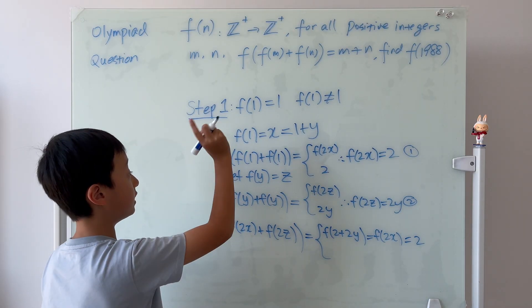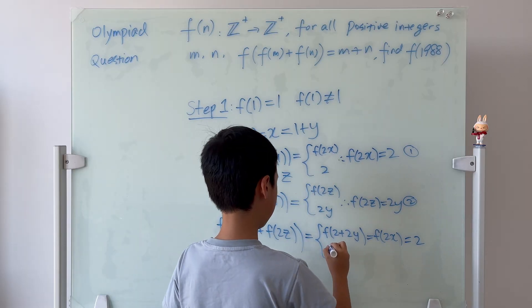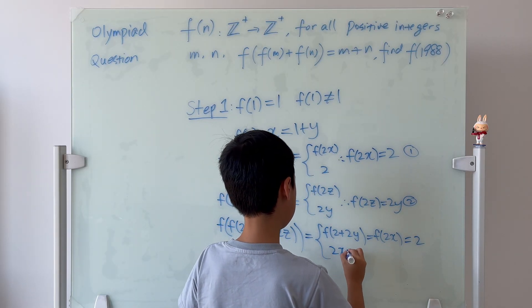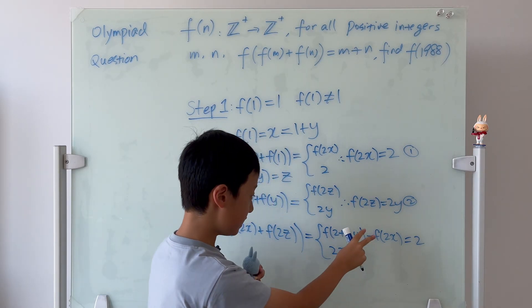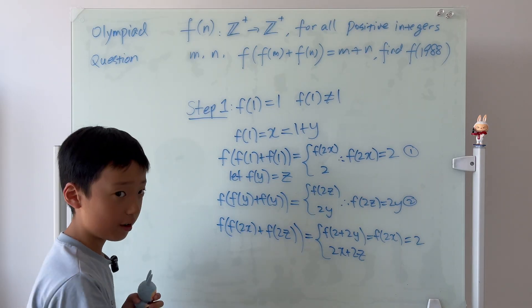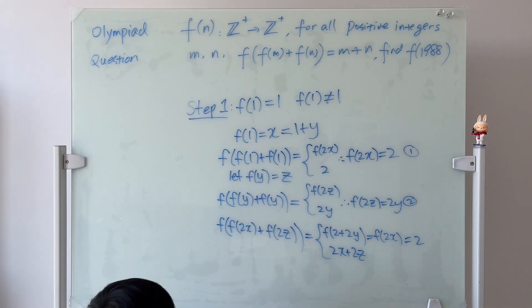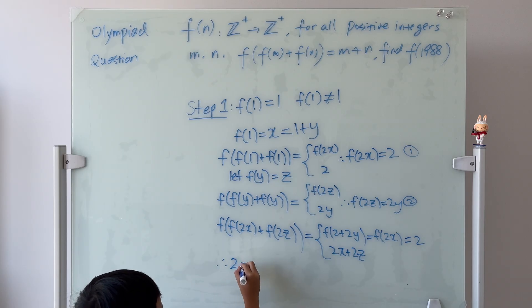Now, we can use the definition. So, it's obviously 2x plus 2z. And, since I don't have space here, I'll write it down here. So, therefore, we know that 2 is equal to 2x plus 2z.